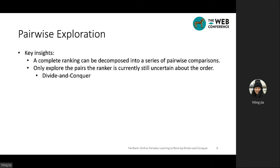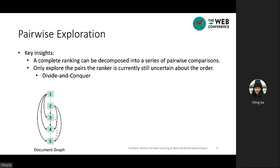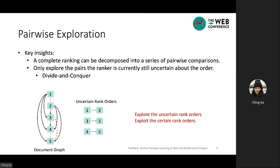In this work, we propose to perform pairwise exploration with respect to the ranker's constant estimation accuracy and uncertainty. The key insight is that any ranking list can be decomposed into a series of pairwise comparisons. Based on the model's uncertainty, we only need to explore the document pairs that the ranker is still uncertain about. For example, in the document graph where each node represents a document and links represent estimated preference, the black line indicates the ranker is certain, while the red dashed line indicates uncertainty. For all uncertain rank orders we propose to perform exploration, while for certain rank orders we perform exploitation, and we can construct the ranked list by a divide-and-conquer strategy.